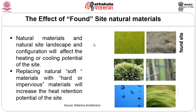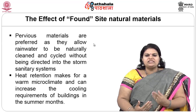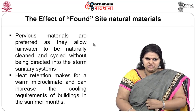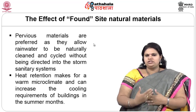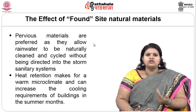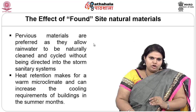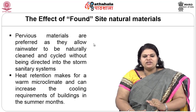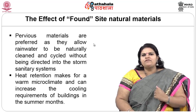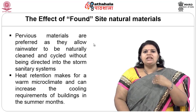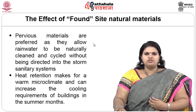If we add hard, impervious materials, the microclimate of the site will change because we are increasing the heat retention potential. Pervious materials are preferred as they allow rainwater to be naturally cleaned and cycle without being directed into storm sanitary systems. You have pervious concrete, terracotta tiles, slate tiles, and all sorts of outdoor options in the pervious category which are easy to maintain and even prevent water logging. Heat retention makes for a warm microclimate and can increase the cooling requirements of the building in summer months.